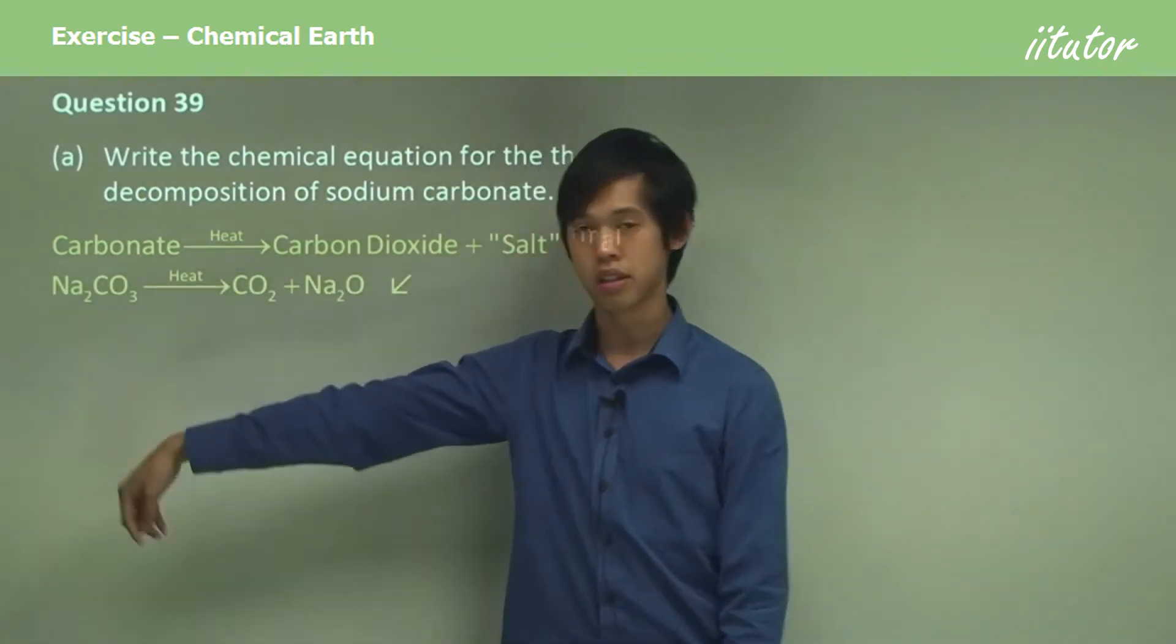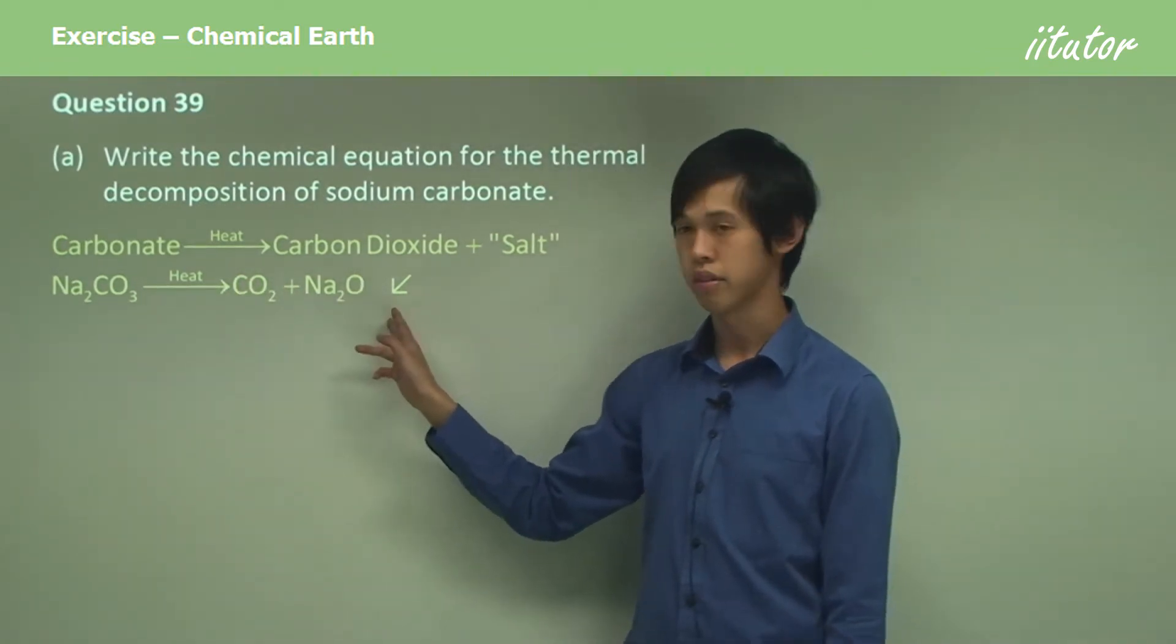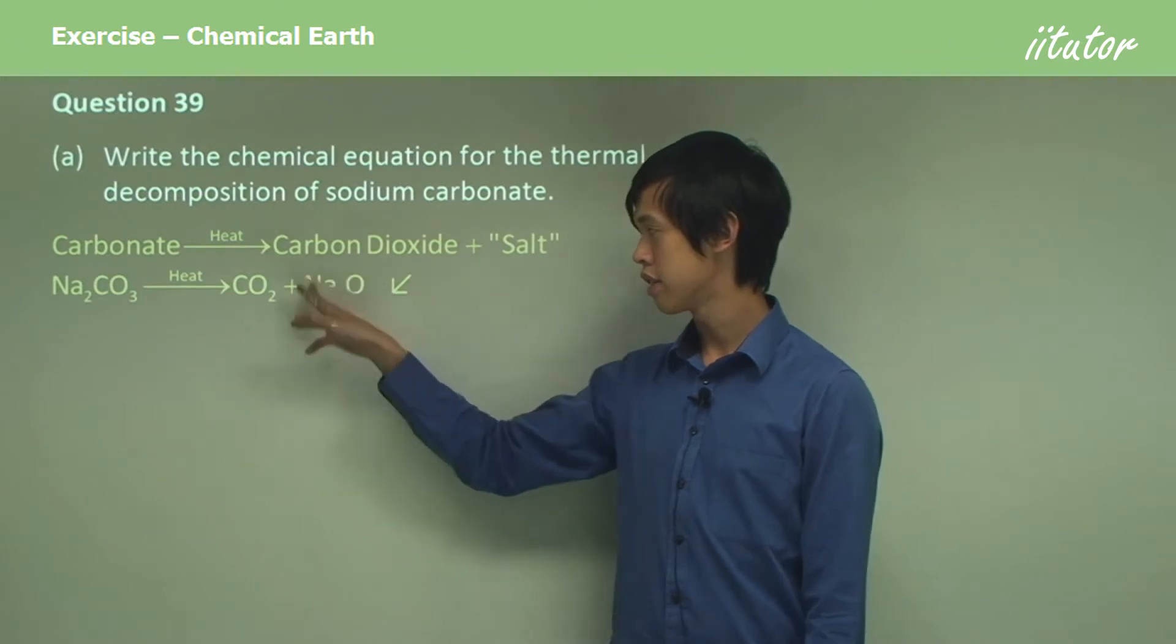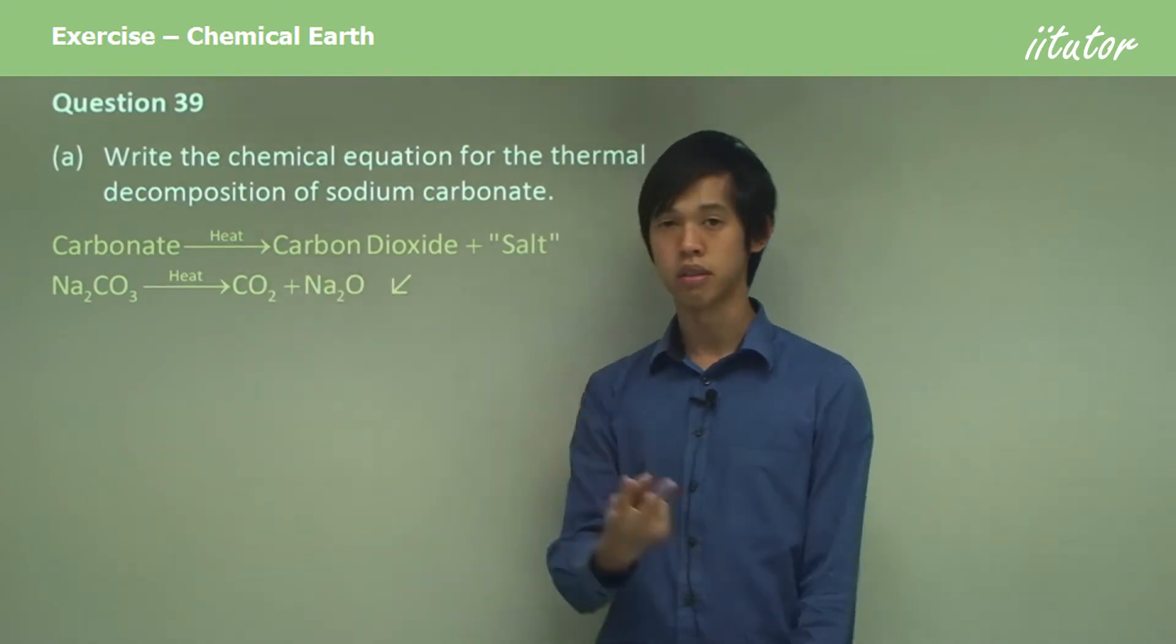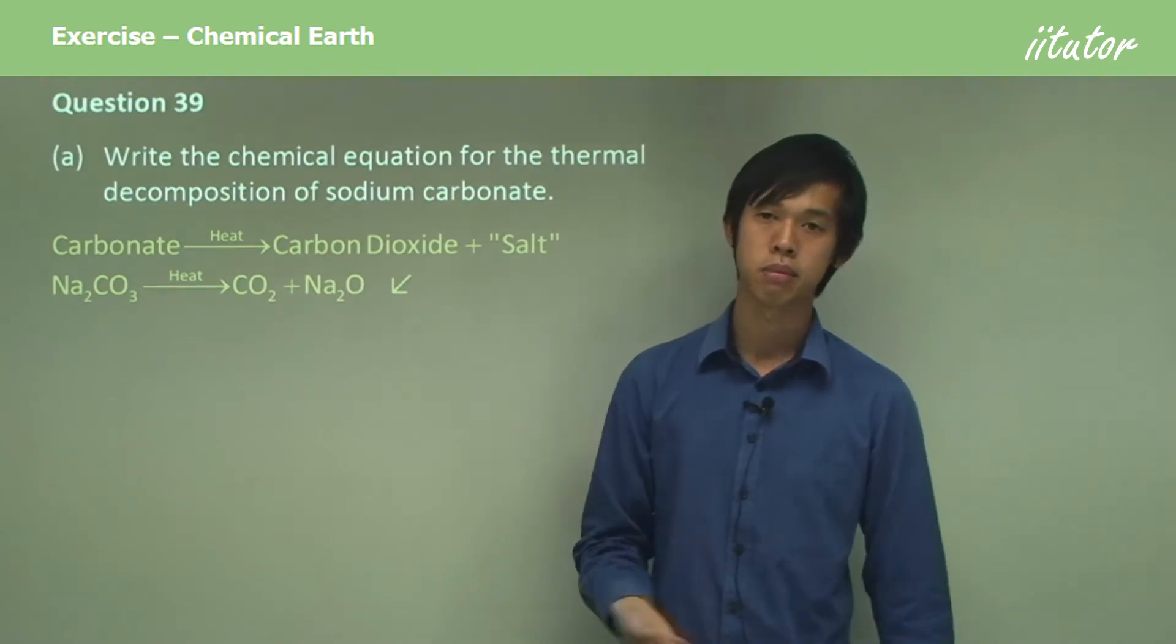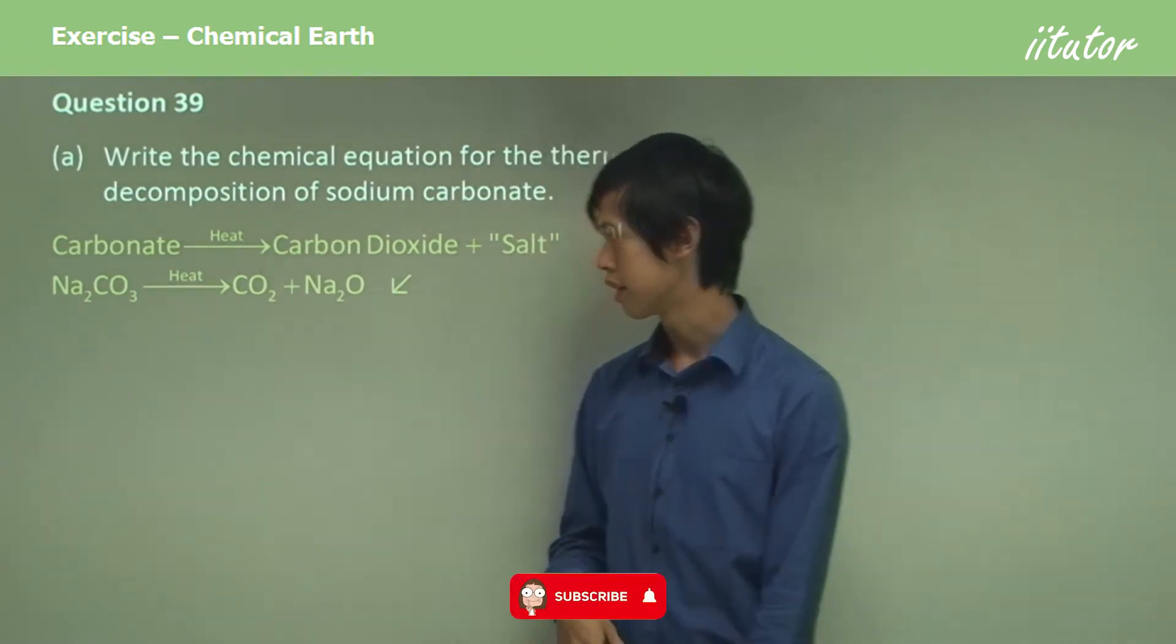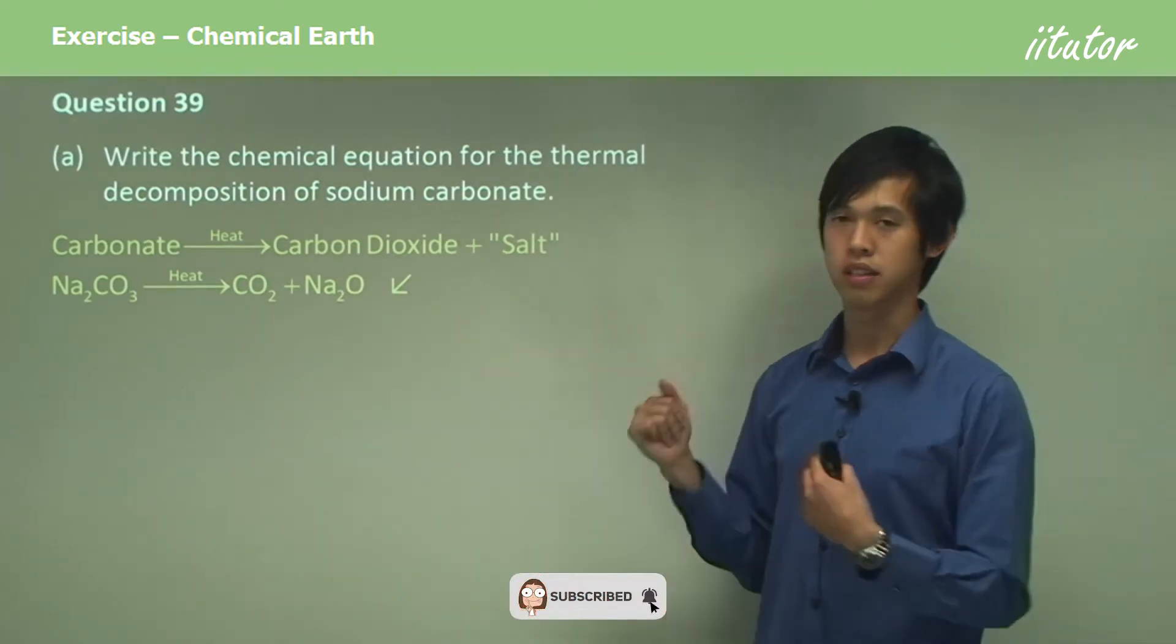So Na2CO3, which is sodium carbonate, turns into CO2 and Na2O. The Na2 comes from the fact that O needs two electrons. Sodium can only give away one, so you need two sodium atoms to satisfy one oxygen atom. And if you try to balance it, you don't need to because it's already balanced.